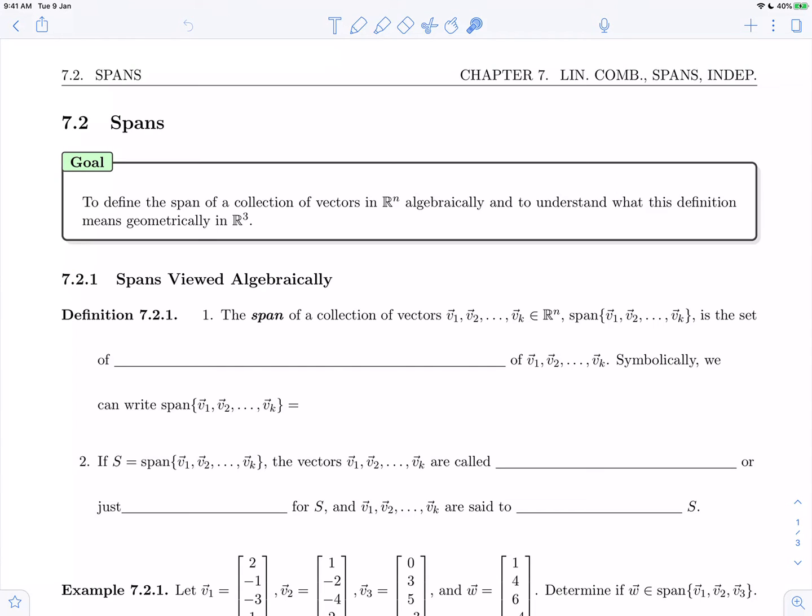Welcome back to Chapter 7 on linear combinations, spans, and independence. In this video we're going to start Section 7.2 on spans. The goal of this section is to define the span of a collection of vectors in R^n algebraically and to understand what this definition also means geometrically in three-dimensional space.